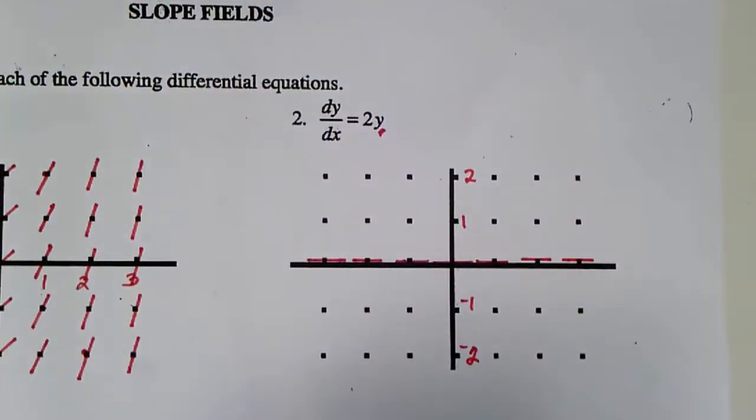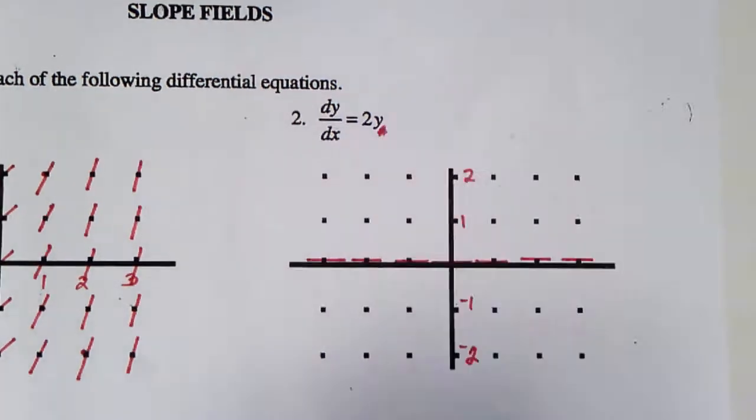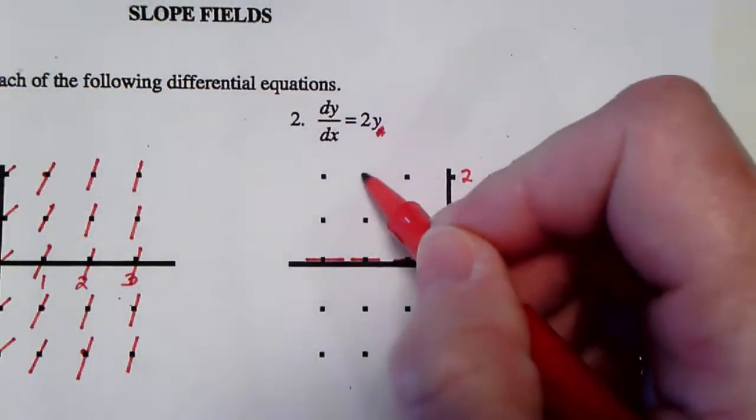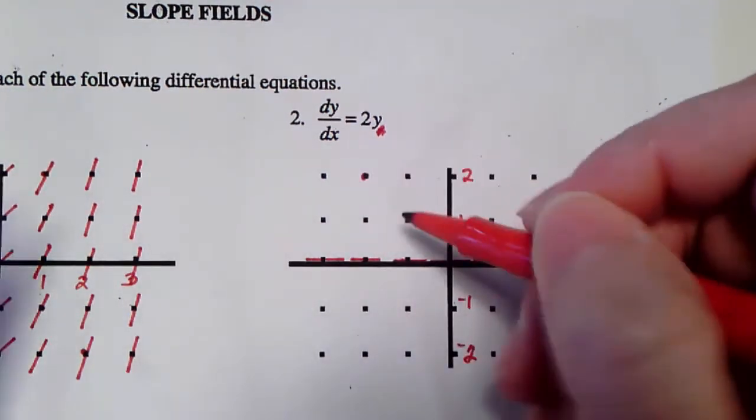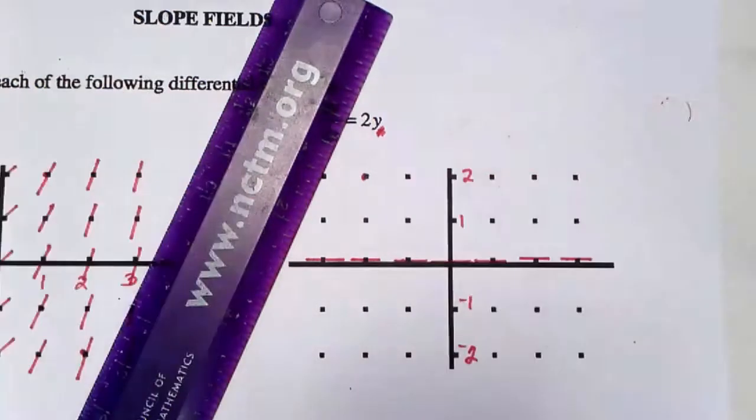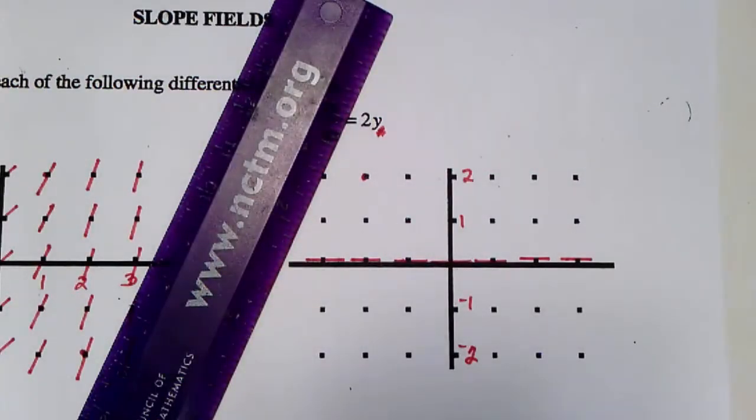Let's do the positive y-values first, starting up at the top at y equals 2. If we substitute 2 into the y in our differential equation, we get that we need a slope of 4. I'm going to start over here and line up my straight edge so that I have a slope of 4.